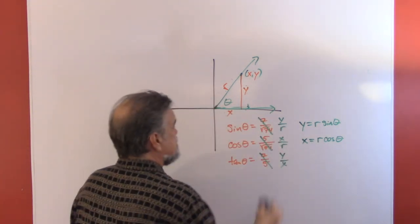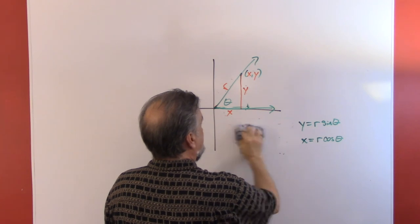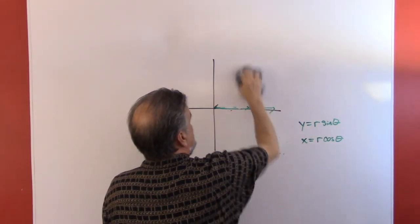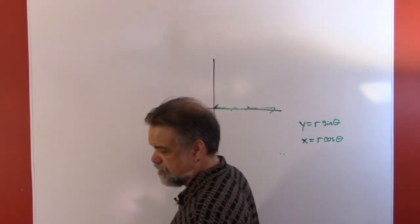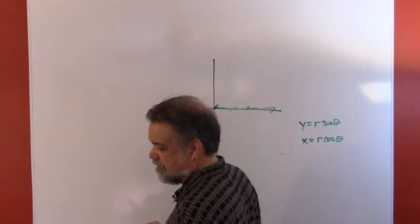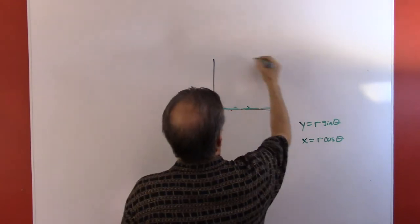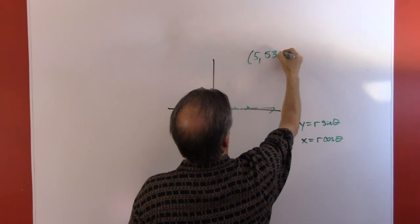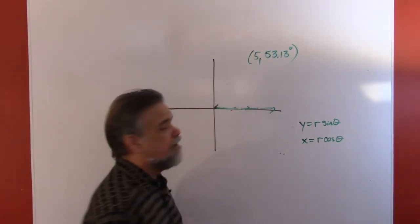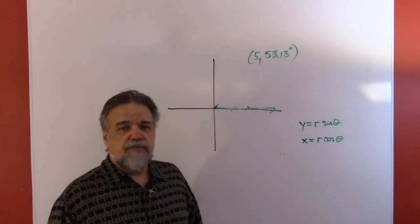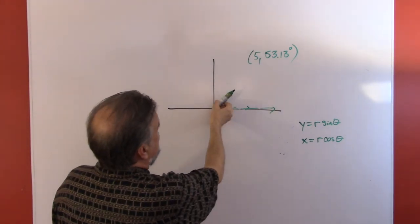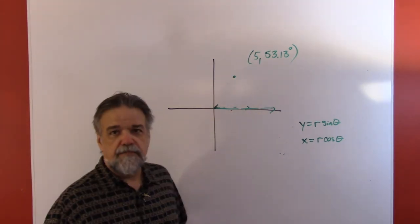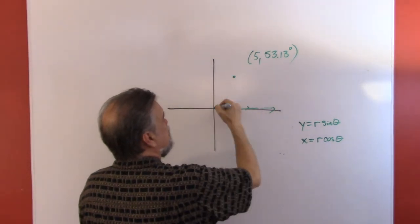So what that means is, let's say we have a point—we will have the point (5, 53.13 degrees). So 53.13 degrees, that's a little more than 45 degrees, so it's going to be kind of going up like that. Let's say it's right there. So this is five units away from the origin.